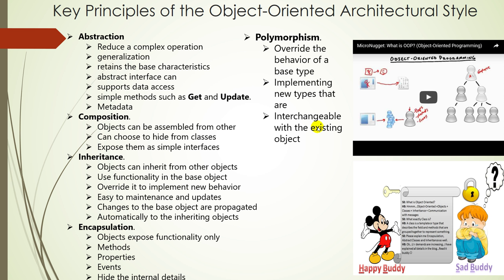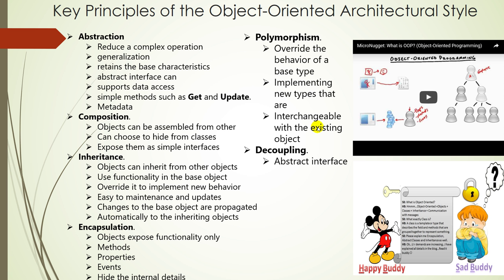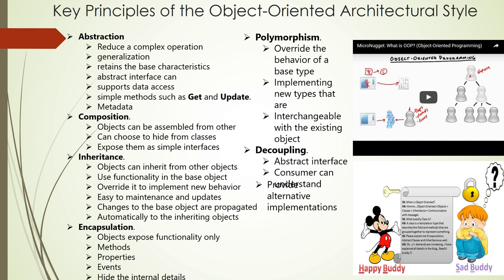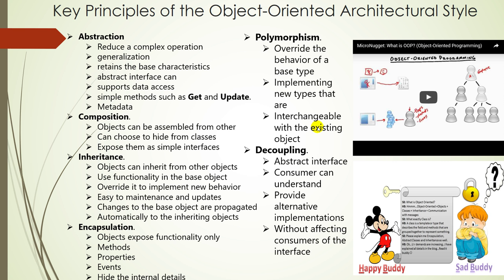The next is decoupling. Objects can be decoupled from the consumer by defining an abstract interface that the object implements and the consumer can understand. This allows you to provide alternative implementations without affecting consumers of the interface.